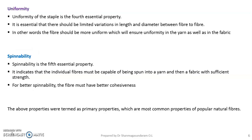The fourth essential property is uniformity. It is essential that there should be limited variation in length and diameter between fiber to fiber — the fiber should be more uniform, which will ensure uniformity in the yarn as well as in the fabric. The fifth essential property is spinnability, which indicates that the individual fiber must be capable of being spun into a yarn with sufficient strength. For better spinnability, the fiber must have better cohesiveness, meaning the fiber has to take up the twist while being made into a yarn.